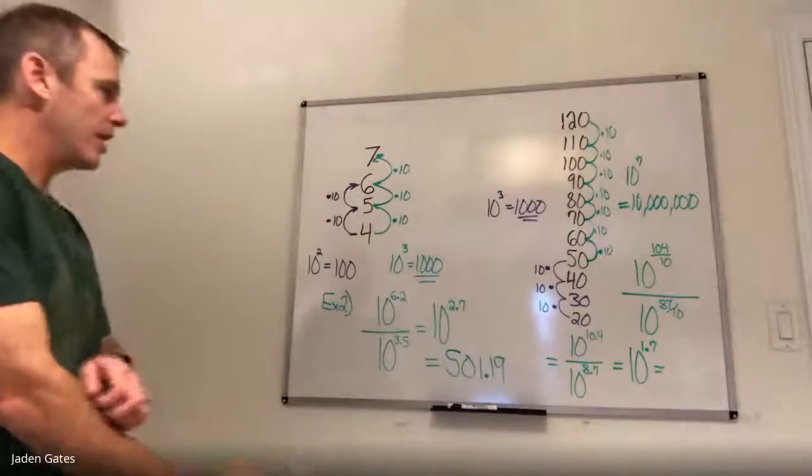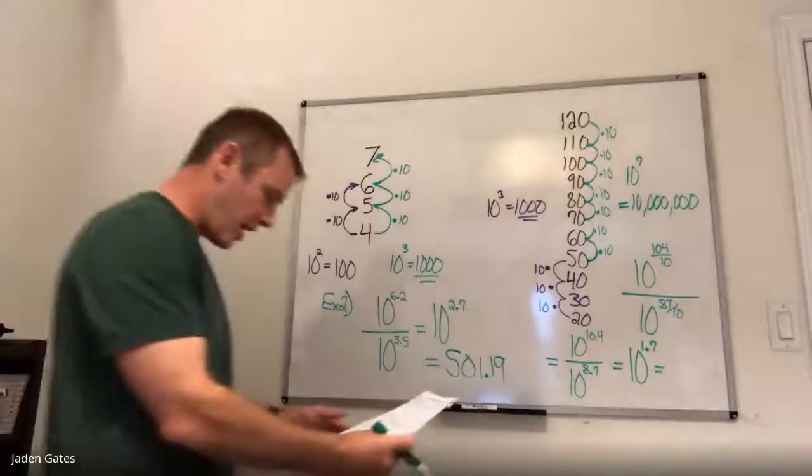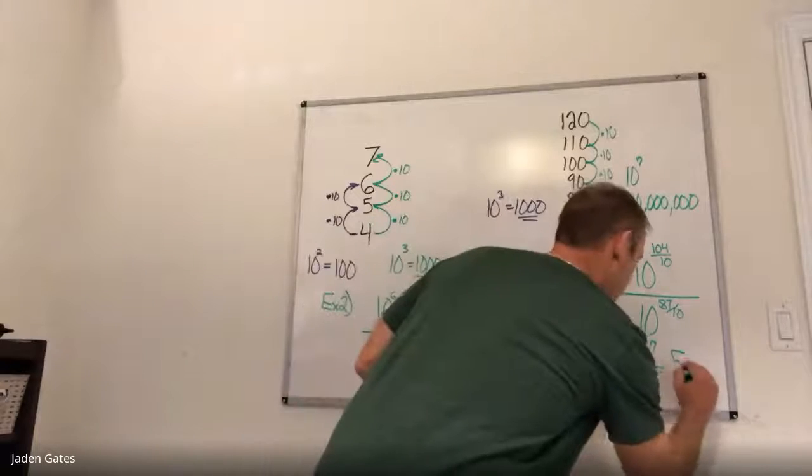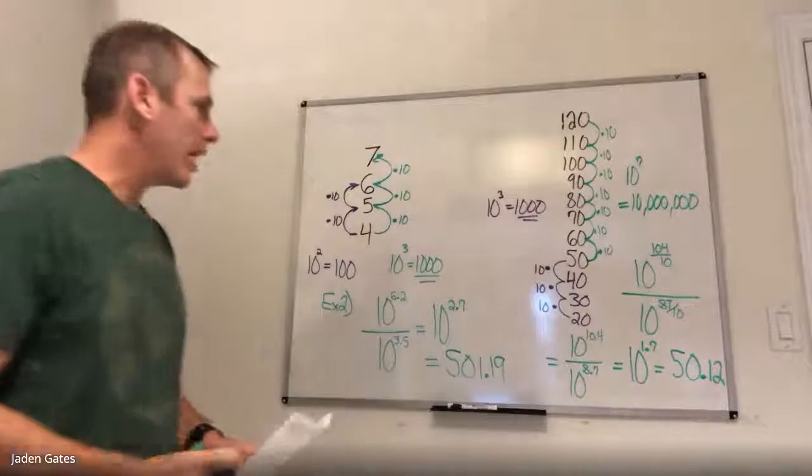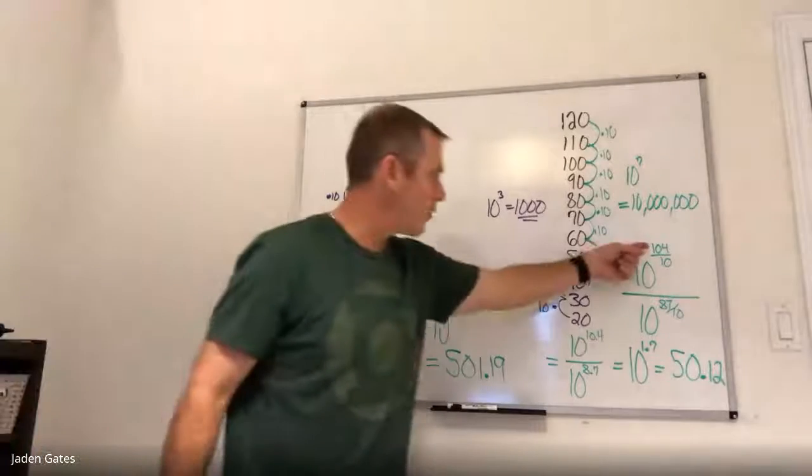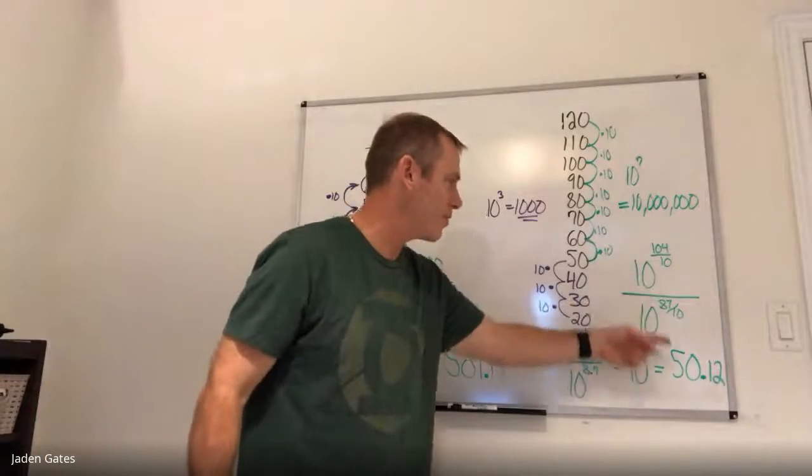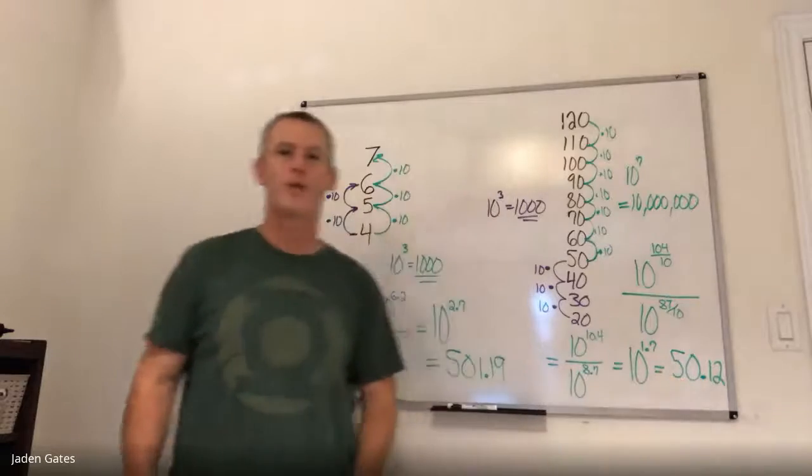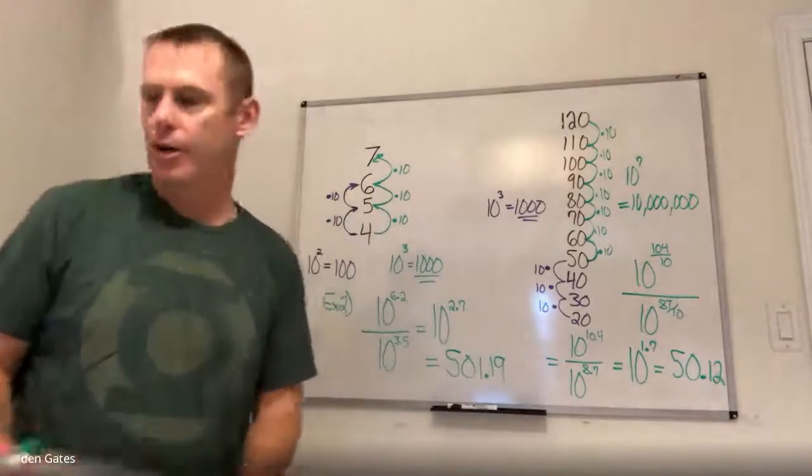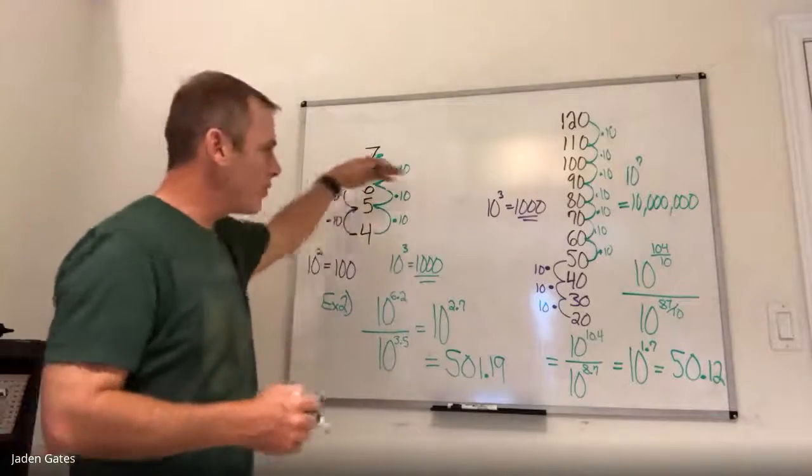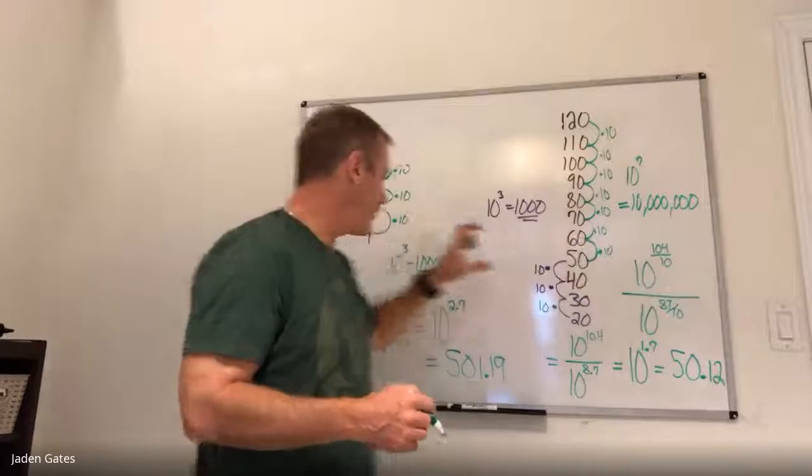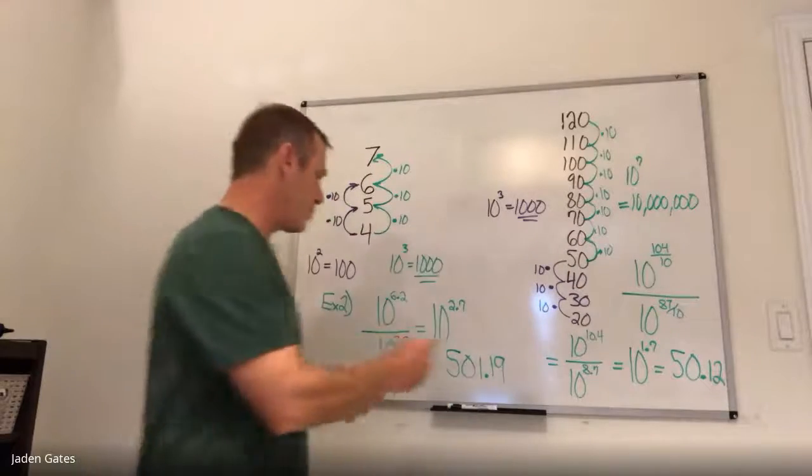And if I calculate those 10 to the power of 1.7, I get 50.12. And so a 104 decibel sound compared to an 87 decibel sound is 50.12 times louder. So again, just a little bit of adjustment. It's easy to do when you have whole numbers, but again, just a little bit of an adjustment when you have decimals.